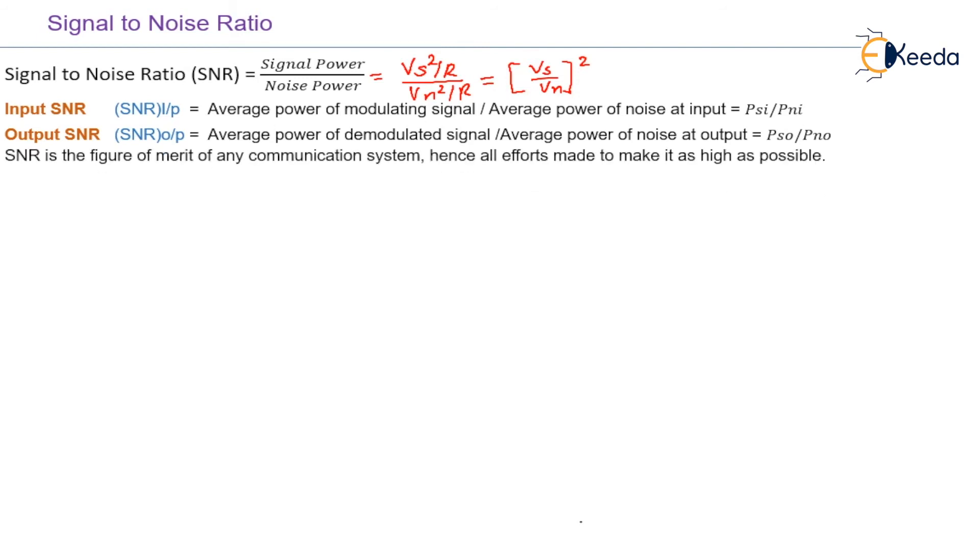SNR is the figure of merit of any communication system. Hence all efforts make it as high as possible. The higher the value of SNR, the greater will be the quality of the received output. It is expressed in decibels as signals have wide dynamic range. Hence logarithmic scale is used.